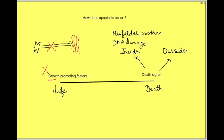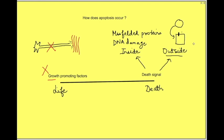So that death signal will come from inside the cell. From outside, a death signal can come when a cell becomes infected — say with a viral infection. The cell starts expressing certain receptors on its surface which are recognized by the immune system. It is signaling the immune system to deliver a death signal so it can die unnoticed, rather than releasing its contents outside and causing severe inflammation.